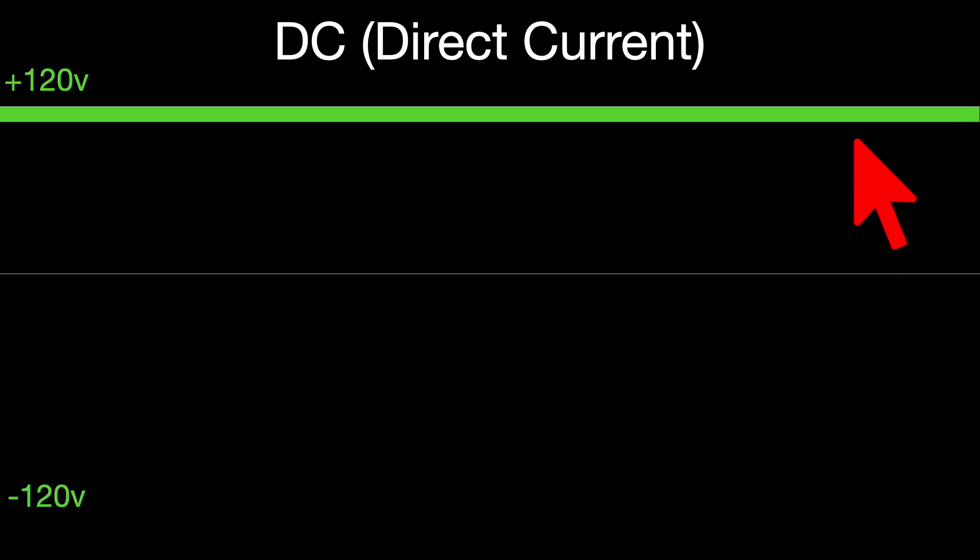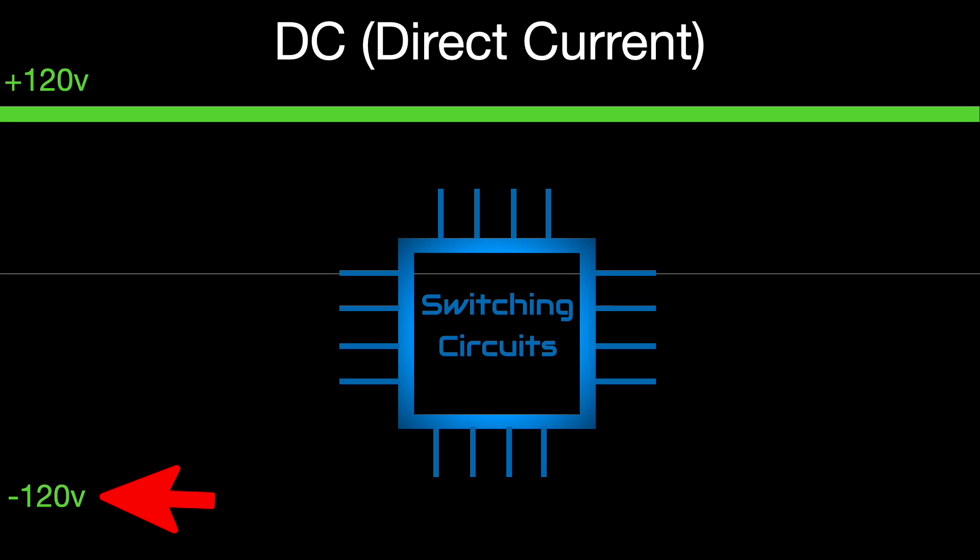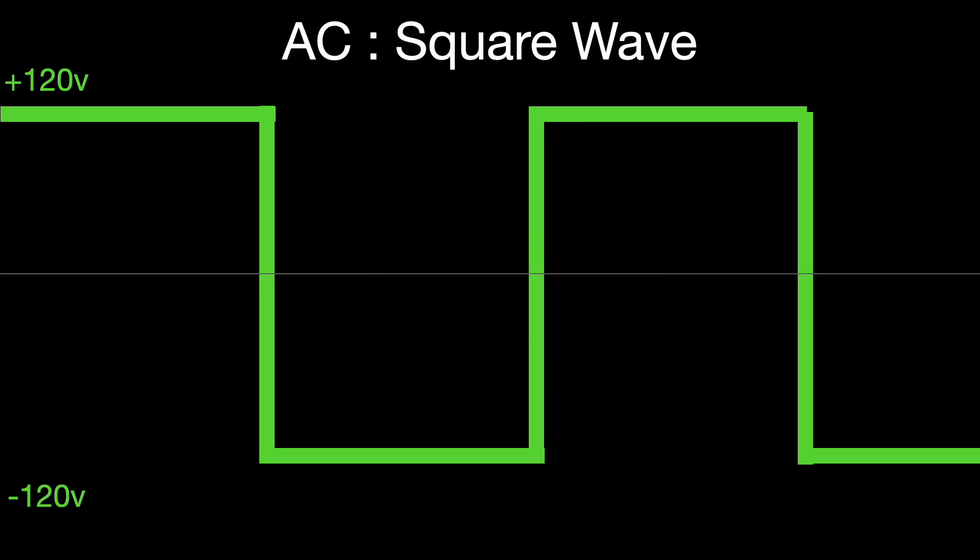The current is only flowing in one direction. But we want to alternate that current between positive and negative, meaning that the current is going to change direction in the cable. So to do that, we're going to run it through some switching circuits that are going to chop it.